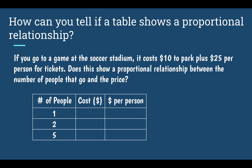Finally, let's look at a slightly different example. If you go to a soccer stadium, it costs $10 to park plus $25 per person for tickets. Is this proportional between the number of people that go and the price? If one person goes, it's $10 to park plus $25 to get in, which is $35 total. Dividing that to get my cost per person — my constant of proportionality — it would be $35 per person. What if two people went? They still pay $10 to park, and two tickets cost $50, for a total of $60. Does that have the same constant of proportionality as the first?